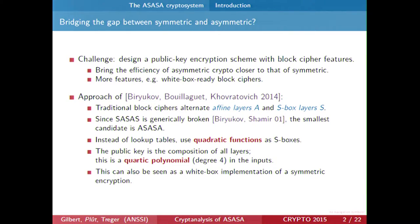Azaza means three affine layers interleaved with two S-box layers. In the approach of Biryukov, Bouygier, and Kovatovich last year at AsiaCrypt, instead of lookup tables as S-boxes, they used quadratic functions in order to use this as a public key cipher. Since the affine layers have degree one and the S-box layers have degree two, you can just output the composition of all layers, which are quadratic polynomials, and use this either as a public key or as a white-box implementation of the block cipher. So in this setting, public key and white box are more or less the same.